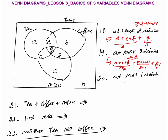At most one drink means less than or equal to one. Maximum it could be one, minimum it could be zero. So we count those who consume one drink — A plus B plus C — and those who drink nothing — H. None will also be included.